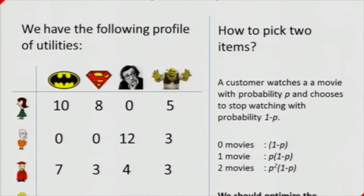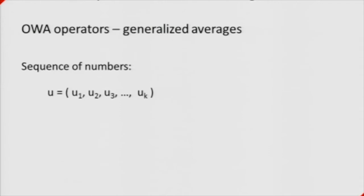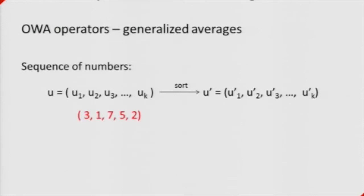There is a very nice mathematical formalism called OWA operators — ordered weighted averages. It's a simple yet powerful concept. We will be picking K movies, so we start with a sequence of K numbers representing utilities for particular movies. The first step in applying an OWA operator is to sort these numbers from best to worst. For example, if utilities were 3, 1, 7, 5, 2 — after sorting you get 7, 5, 3, 2, 1.